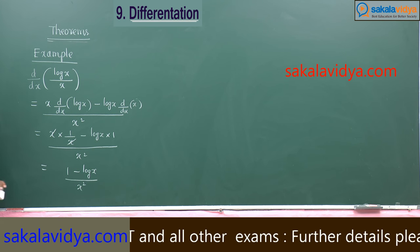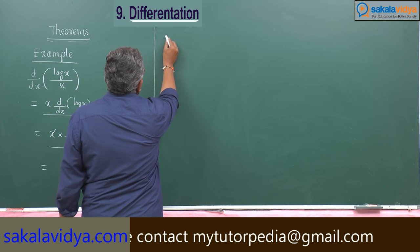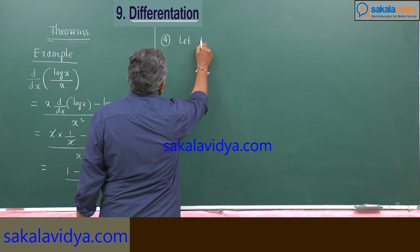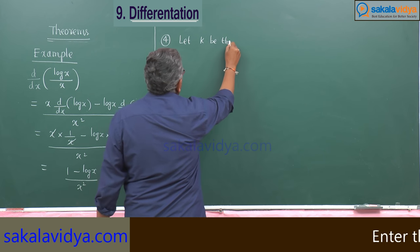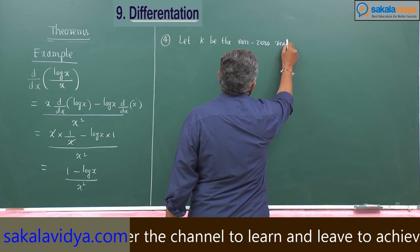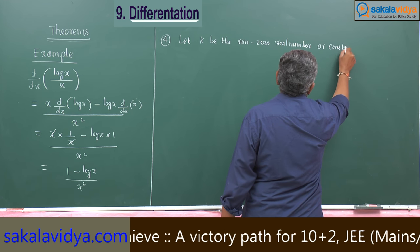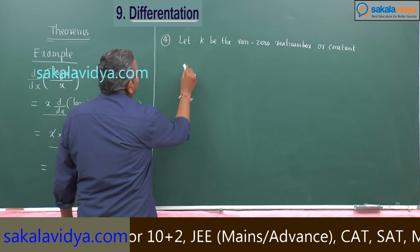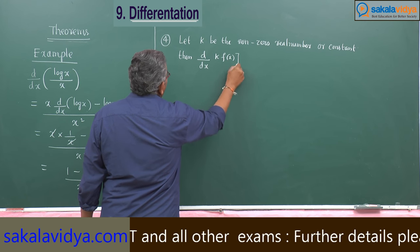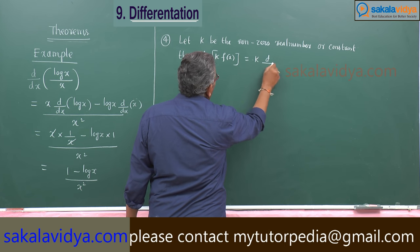Now let us discuss one more theorem. Let k be a non-zero real number or constant. Then d/dx of k·f(x) — that means a constant multiplied by any function — you can take out k as a common factor, giving k into d/dx of f(x).